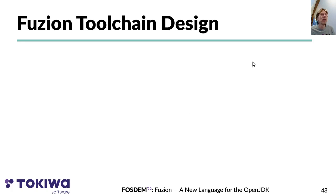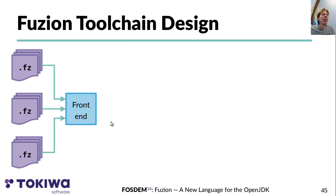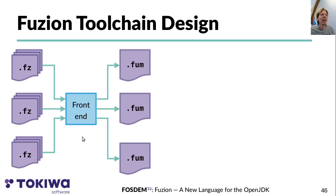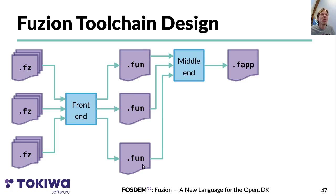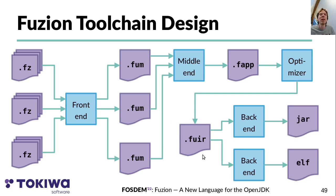An overview of the Fusion toolchain: Fusion source code files are processed by the Fusion front end, which generates Fusion module files — a binary file format similar to class files, JAR files, or Java modules. Those modules are then processed by the Fusion middle end to create a Fusion application, an intermediate representation for the whole application. This can go through an optimizer or analyzer to create the Fusion intermediate representation, which is then input to different backends that create executable code, JAR files, binaries, or similar.